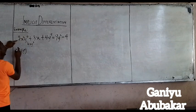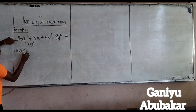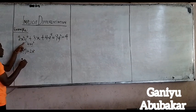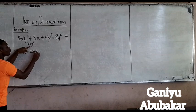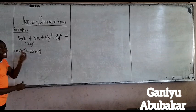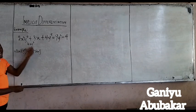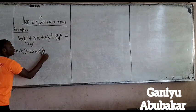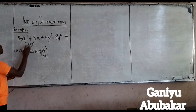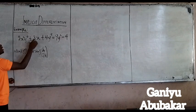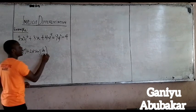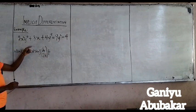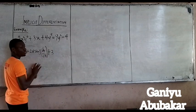If I differentiate Y alone, I will have 4Y to power 3 from the general method. So I will have plus — pick out the 2, pick out X squared, and pick out 4Y to power 3. Since I differentiate Y, I attach the dy/dx to it. Next, I have a plus sign. If I differentiate 3X, I will have 3.